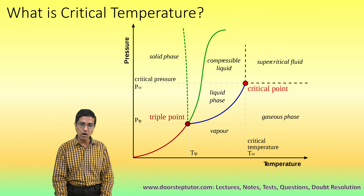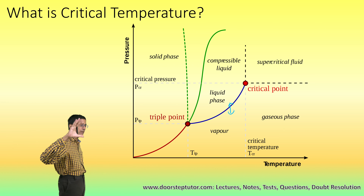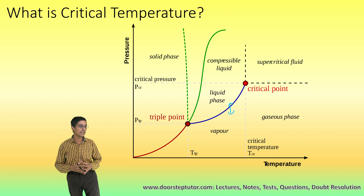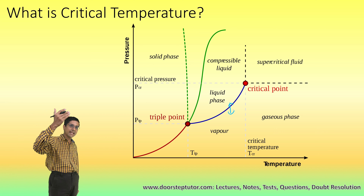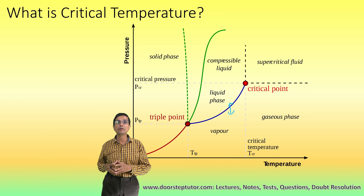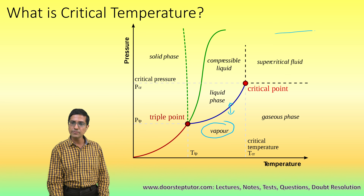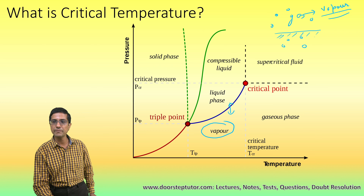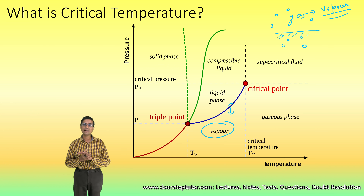One specific case where we use the term vapor even in colloquial usage is when the liquid phase coexists with the gaseous phase. For example, in mercury vapor lamps - those older lamps - liquid mercury exists together with gaseous mercury. In that case, we say it is a mercury vapor lamp, not a mercury gas lamp. So when the two phases, the liquid and the gas, coexist, then that gas is specifically known as vapor all the time, even in colloquial usage. Otherwise, in colloquial usage, we sometimes call things gas even though they are below their critical point.